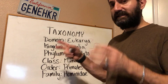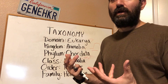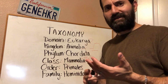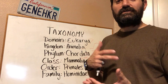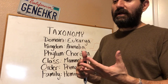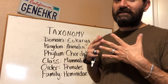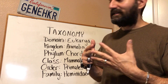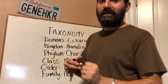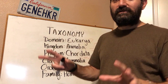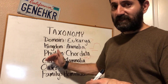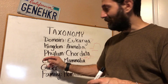Next would be kingdom. What kind of eukaryotic creature are we? Are we plants? Are we fungi? These are different kingdoms within our domain. No, we are animals. We are in the kingdom animalia because we are animals. We are not in the kingdoms of plants or fungi. You see how it's branching out? It's getting more specific now with this hierarchy of taxonomy.